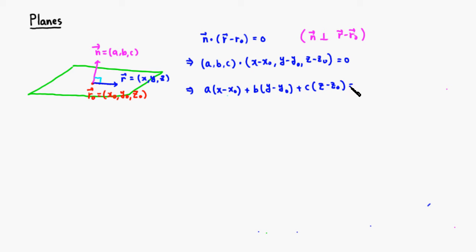0 is equal to 0. And so this is the equation of a plane right here. I personally like this form, but if you multiply it all out, you end up getting: a x minus a x0 plus b y minus b y0 plus c z minus c z0 is equal to